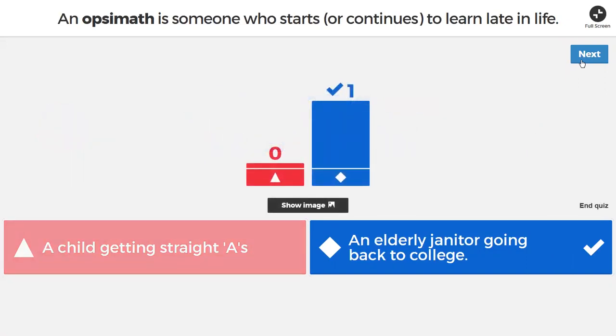And so we choose an elderly janitor going back to college. If we look at our two examples, a child getting straight A's versus an elderly janitor going to college, that's the only one that makes sense. It's not a terribly difficult question. It should be obvious from what's given. An opsimath is someone who starts or continues to learn late in life.